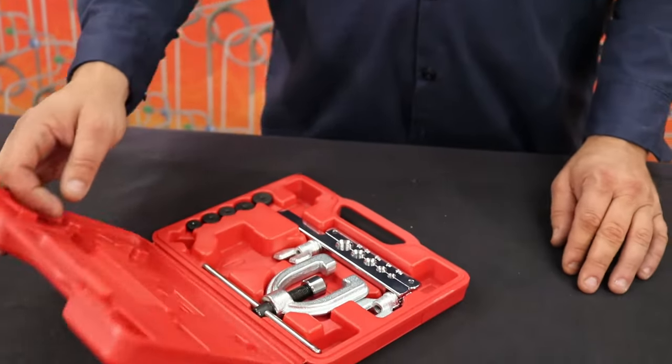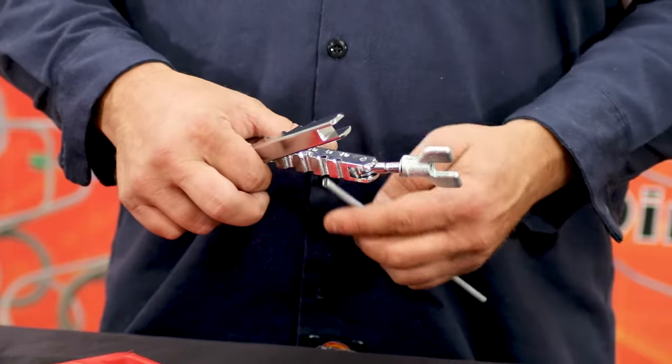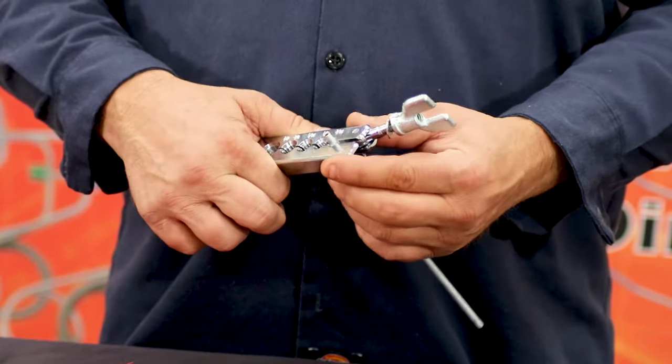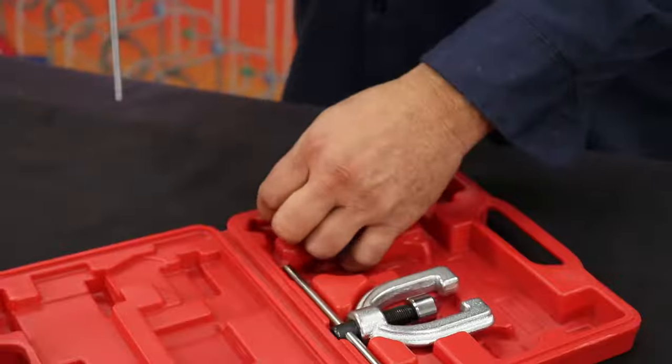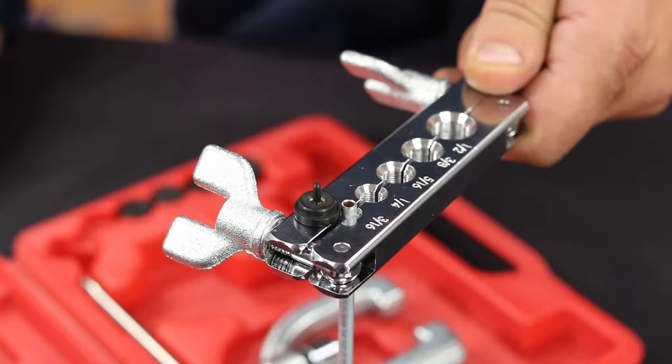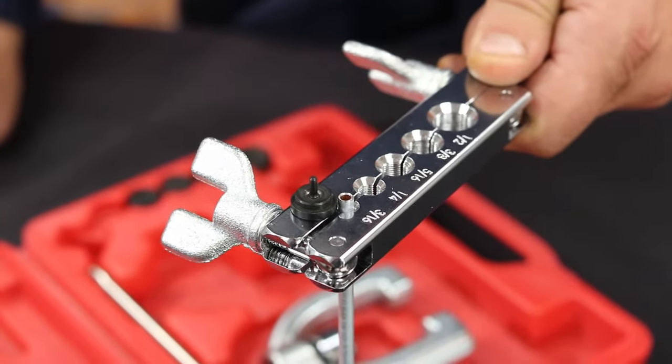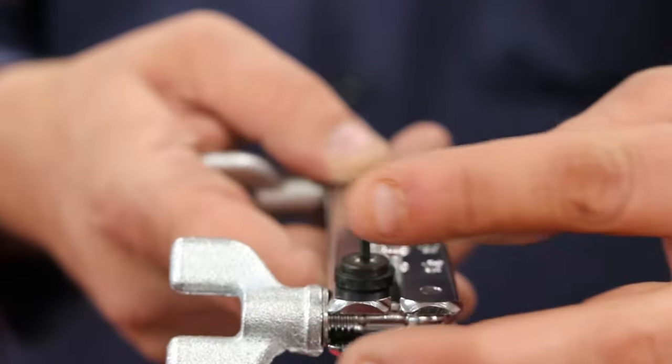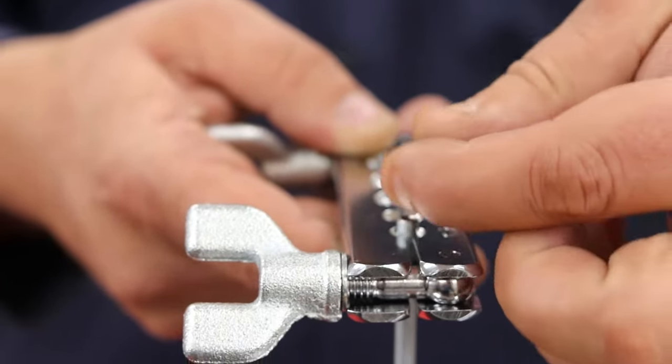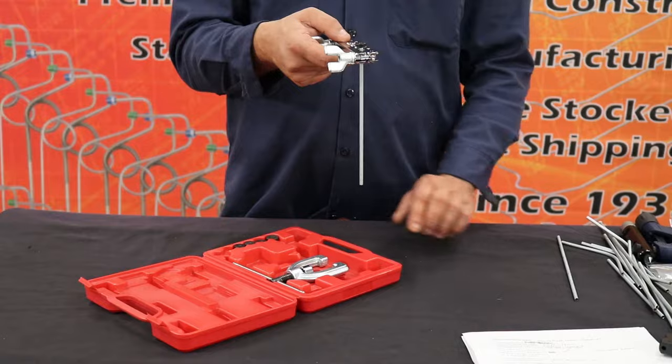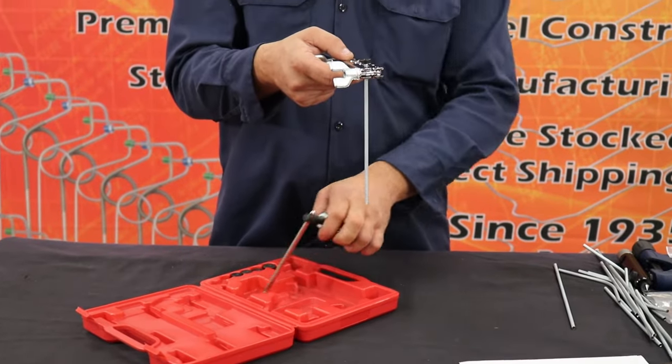Now that you have your double flare tool kit and adapters, locate the die block and begin feeding your line through until it is the same height of the lip of the button. Make sure your tube is flush with the top of the button.